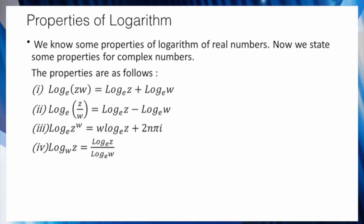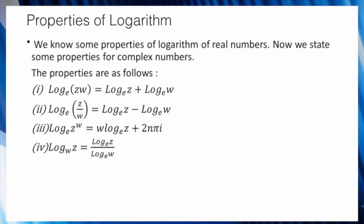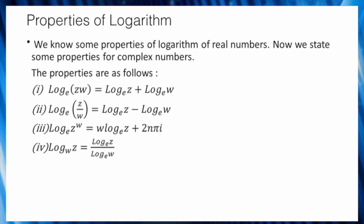Now, the properties of logarithm of complex numbers are as follows: (1) log_e(zw) equal to log_e(z) plus log_e(w); (2) log_e(z/w) equal to log_e(z) minus log_e(w); (3) log_e(z to the power w) equal to w·log_e(z) plus 2nπi; (4) log base w of z equal to log_e(z) divided by log_e(w).